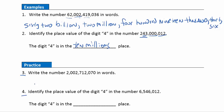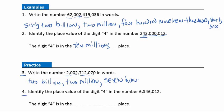Looking at question three, we have a very big number we're going to write in words. It starts out with two — let's see which period that's in. Here's ones, thousands, millions, billions — so that's two billion. Then two again, but this one is in the millions place, so two million. Then 712 thousand. And then finally seventy.